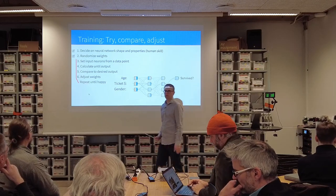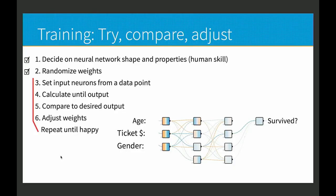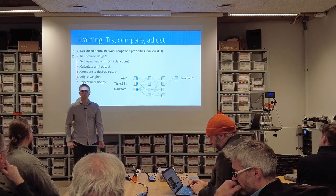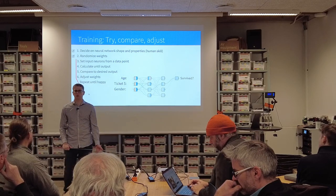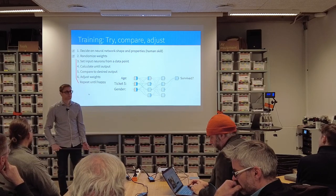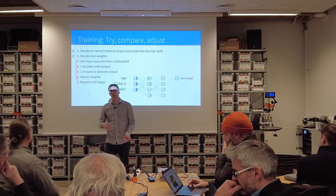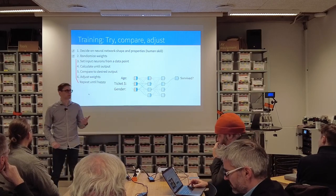How do we train a neural network like this? It's pretty much like training for anything really. If we want to play tennis, we start training our tennis serve: we try to serve, compare where the ball went versus where we wanted it to go, then we adjust and try again. Repeat. Practice makes perfect.